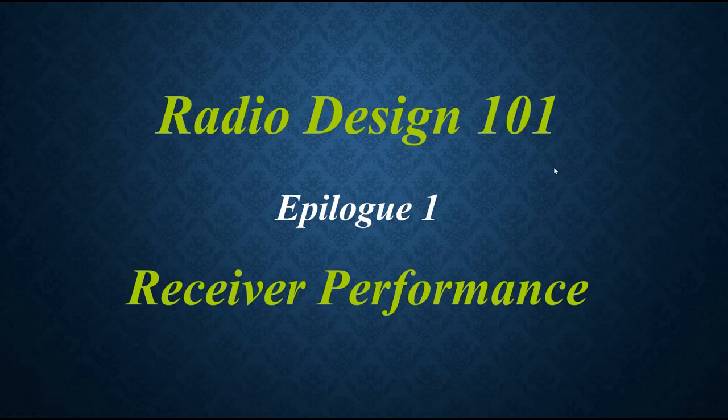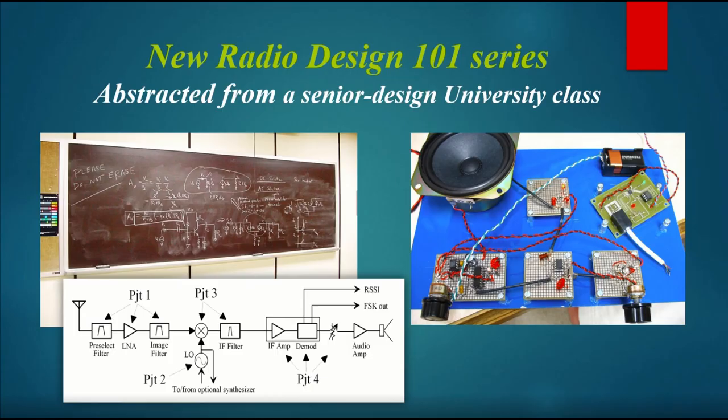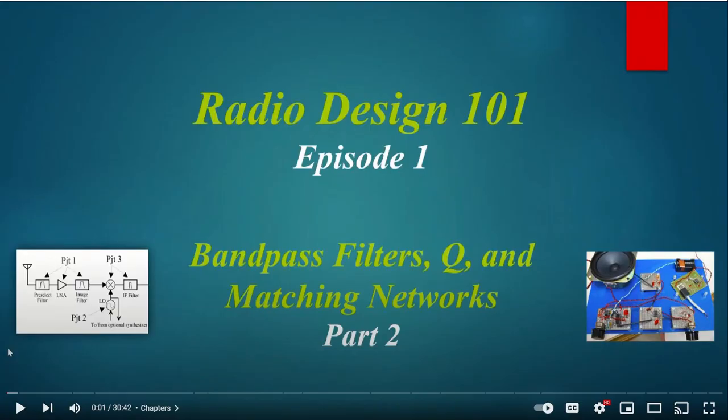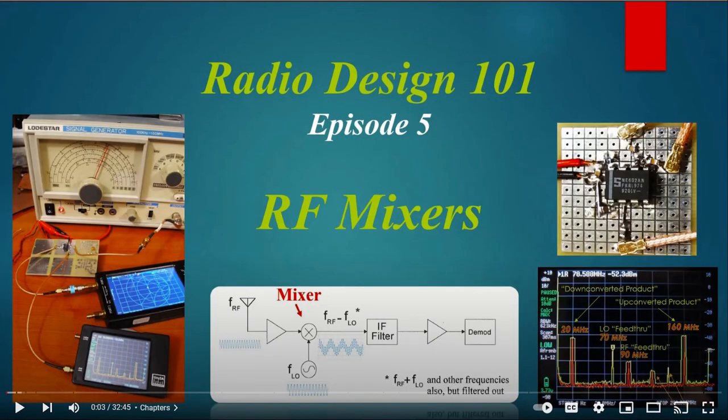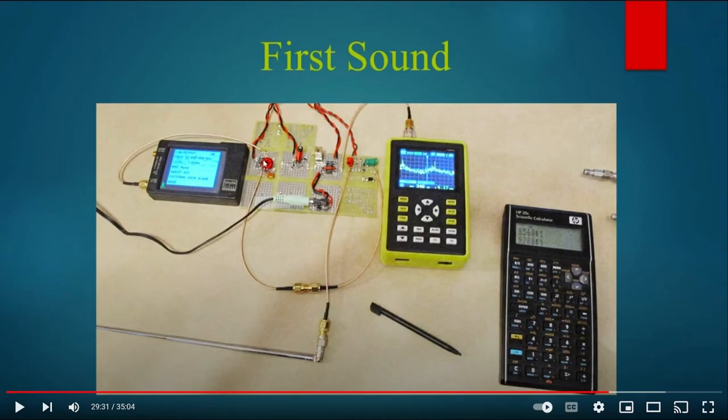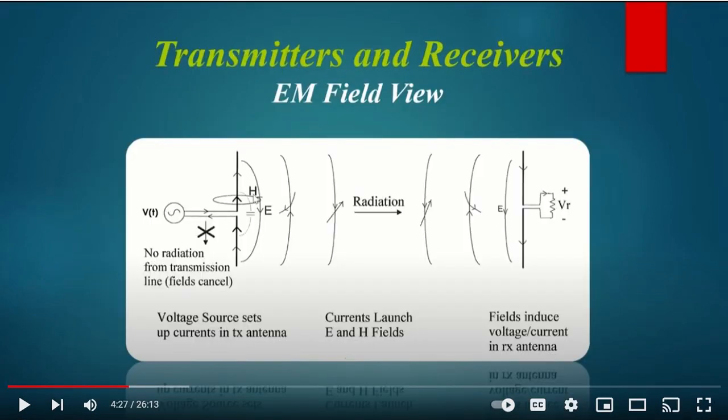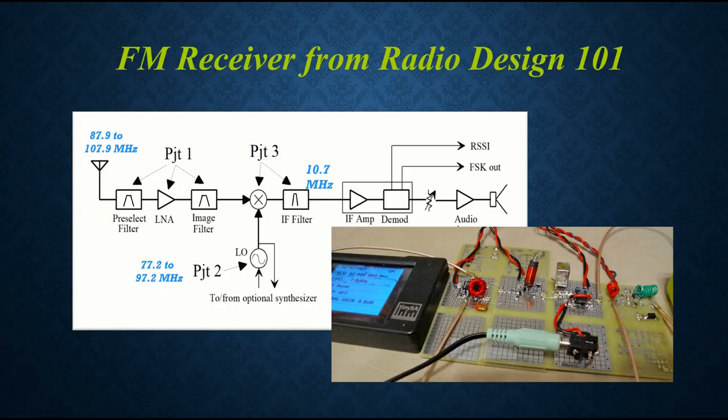Greetings. Welcome to or welcome back to the Radio Design 101 series. Today's episode is an epilogue to the original series where we designed, built, and tested an FM broadcast band receiver. We're going to look at the performance of that receiver, because it's one thing to get it done and another thing to get it working very well. But I want to emphasize that this material is very general, not dependent on that particular design. Instead, we're exploring receiver performance in general. If you haven't seen the previous episodes, don't worry, we can just start here.